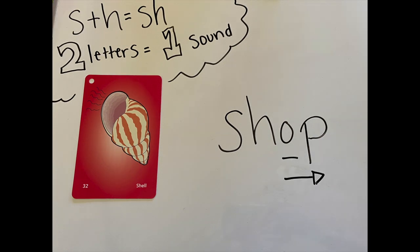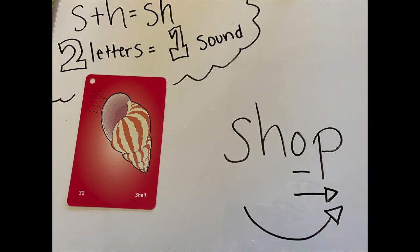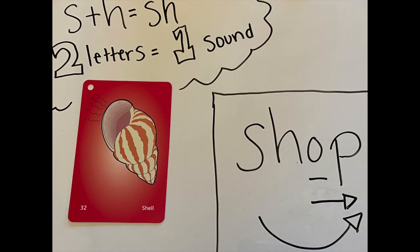The next thing I do is slide right. O makes AH. AH-P. Now I add the beginning sound. SHAHP — put it all together: SHOP. My word is SHOP.